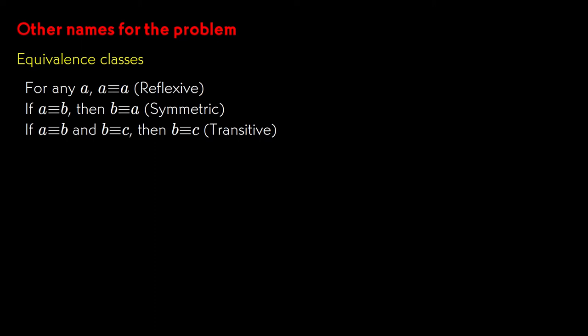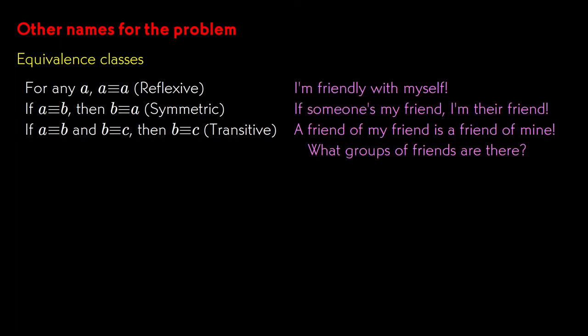The term equivalence classes comes from the domain of modern algebra, where an equivalence relation is defined as a Boolean function among pairs of a set of objects, and the function is reflexive, symmetric, and transitive. Again, it's often easier to imagine something concrete.